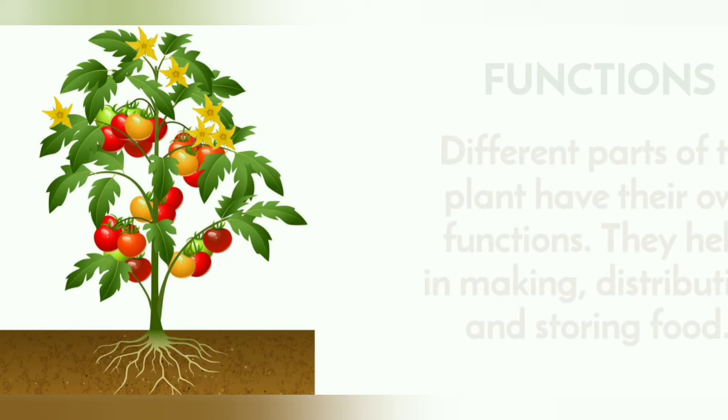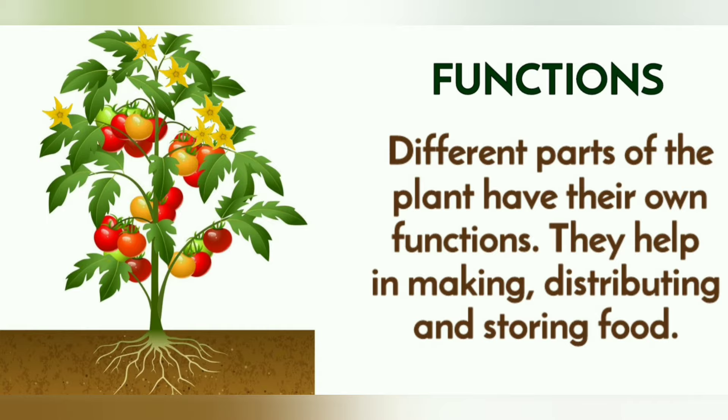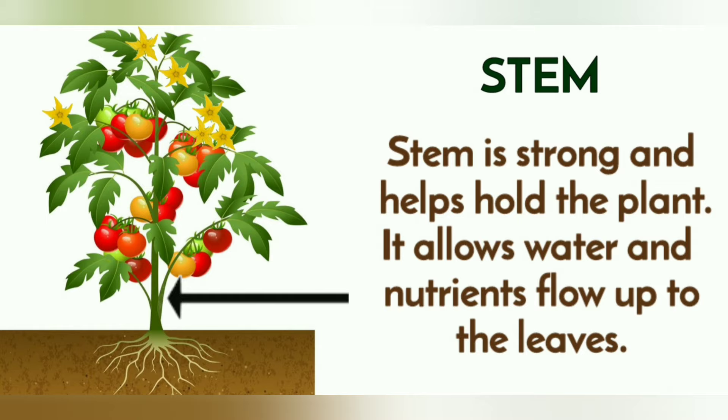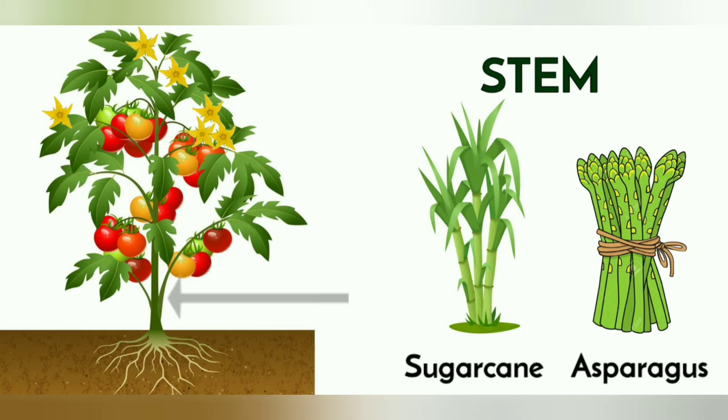Different parts of the plant have their own functions. They help in making, distributing and storing food. Stem is strong and helps hold the plant. It allows water and nutrients flow up to the leaves. Some examples of stem we eat are sugarcane and asparagus.